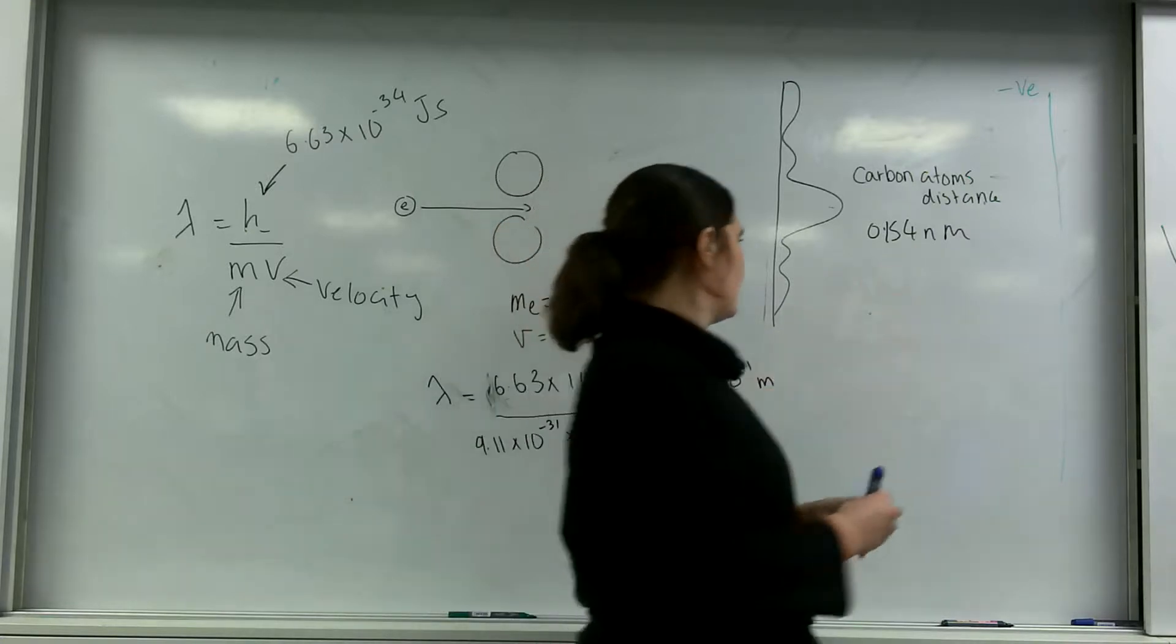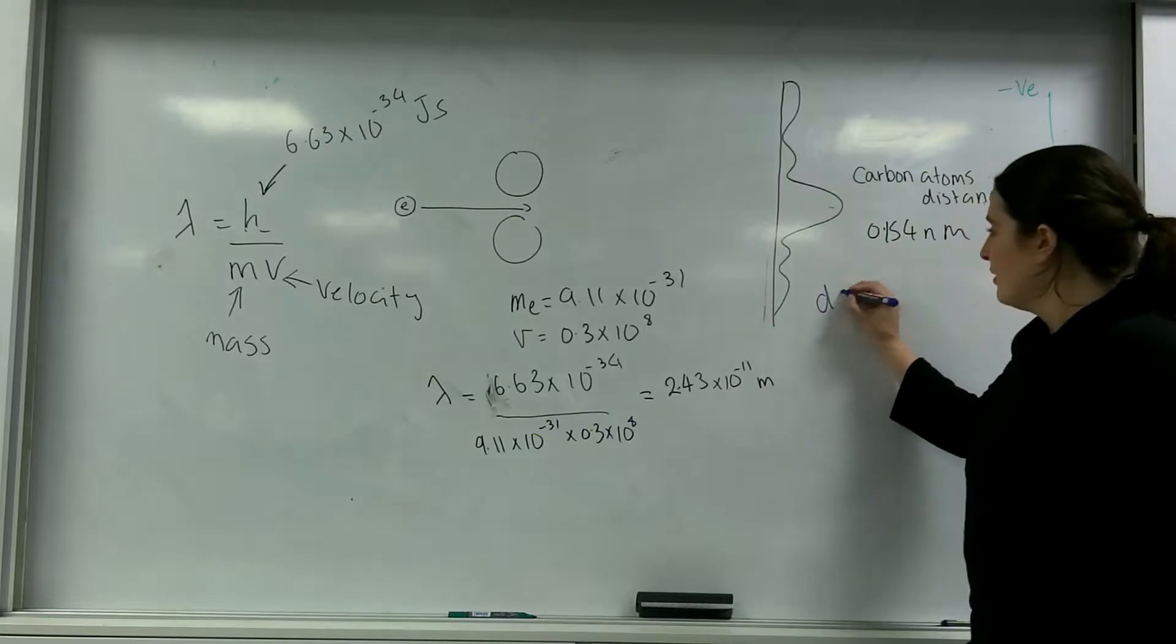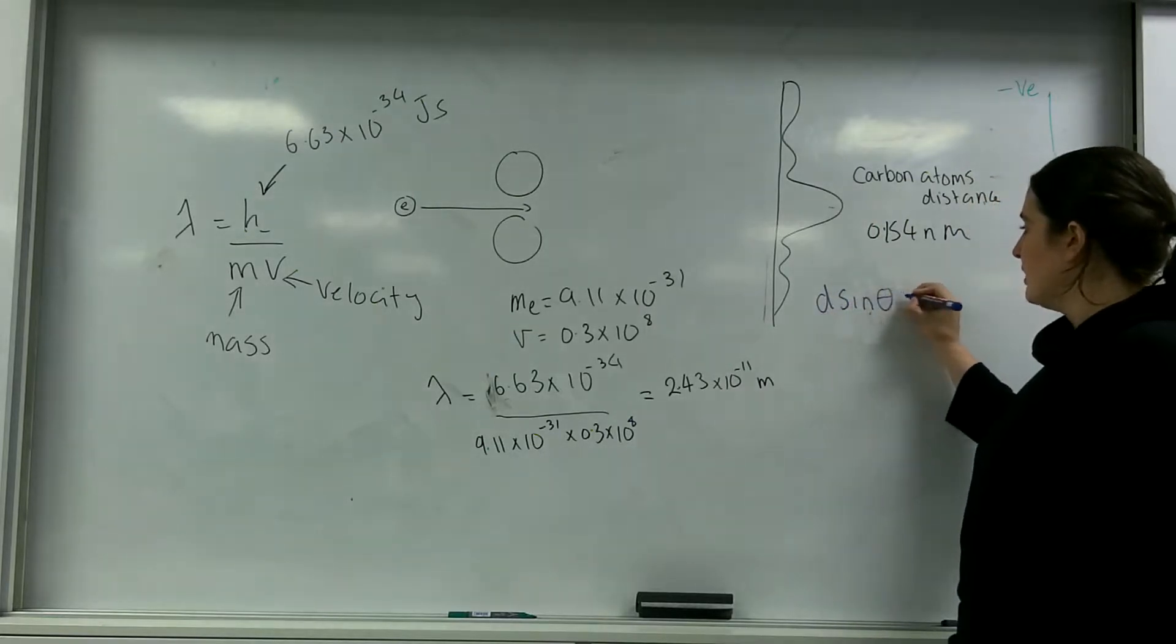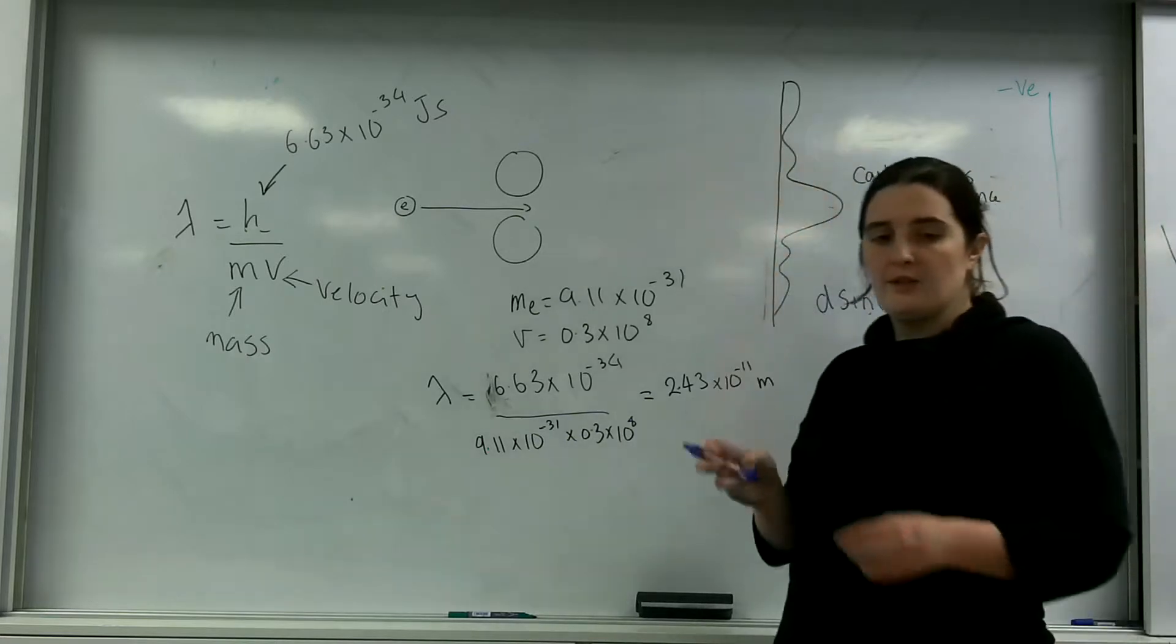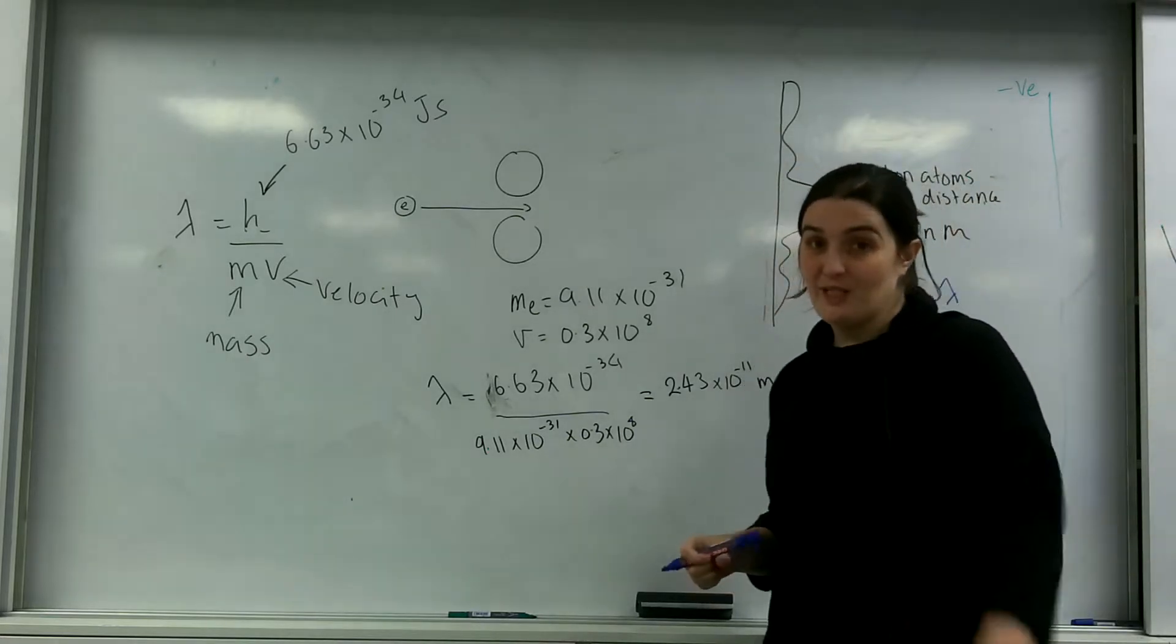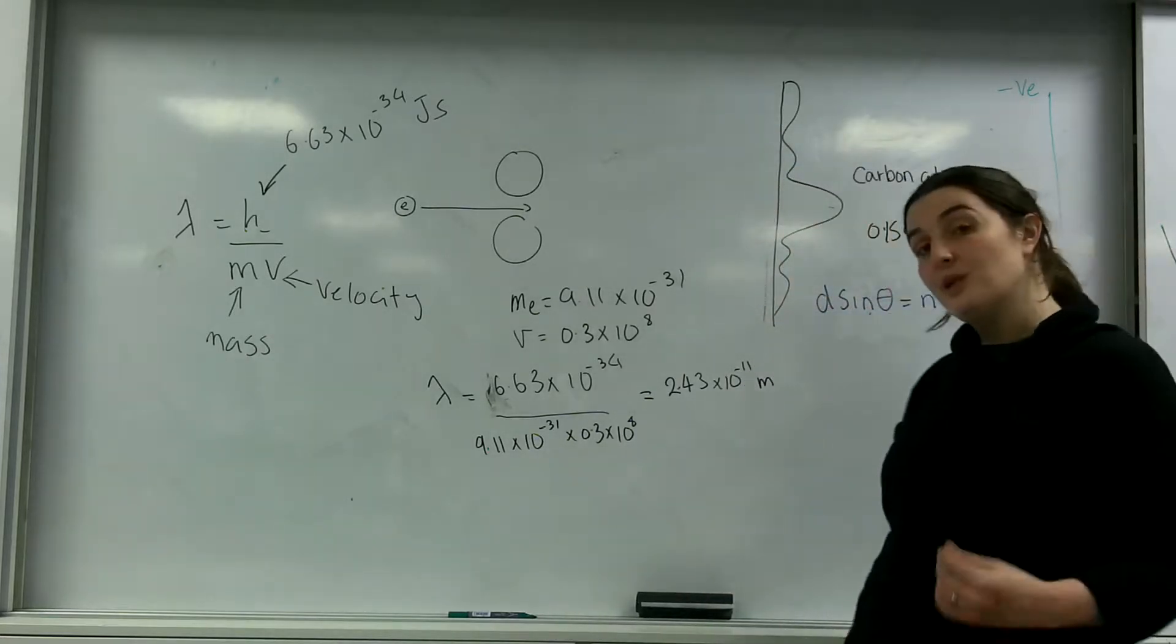So, d sin theta equals n lambda. These carbon atoms are acting like a diffraction grating. This is why it's called electron diffraction.